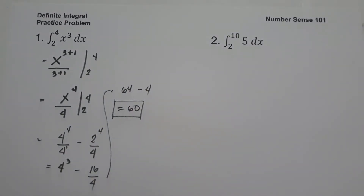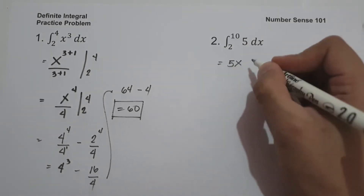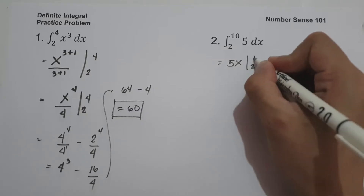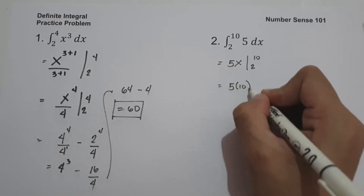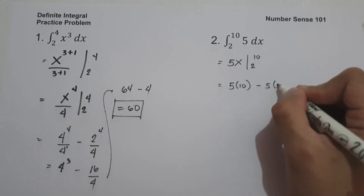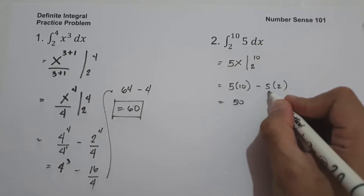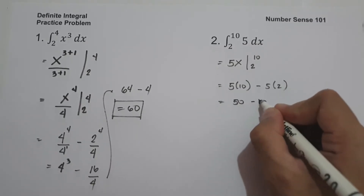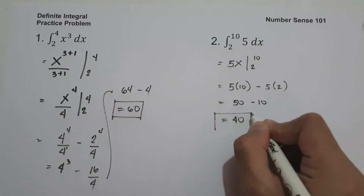For example 2, what is the anti-derivative of 5 dx evaluated from 2 to 10? The anti-derivative of 5 is 5x, evaluated from 2 to 10. This gives us 5 times 10 minus 5 times 2, which is 50 minus 10, and that equals 40. This is our answer.